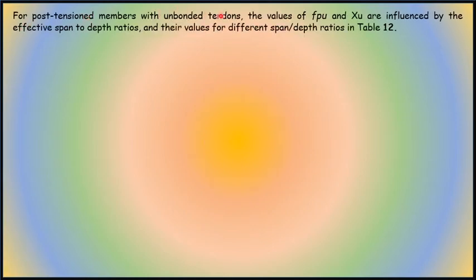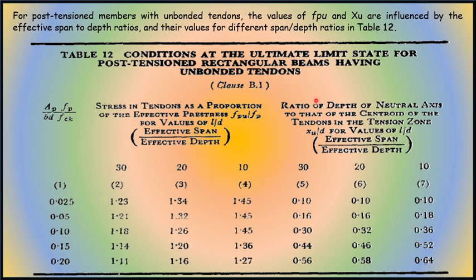For post-tensioned members with unbonded tendons, the values of FPU and XU are influenced by the effective span-to-depth ratio — that is, the total span divided by the effective depth. Values for different span-to-depth ratios are provided in Table 12 of IS 1343, which covers ultimate limit state for post-tensioned rectangular beams with unbonded tendons. The effective reinforcement ratio is given up to 0.2; beyond 0.2 or beyond 0.4 in Table 11, the boundary values apply.